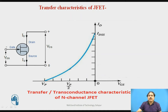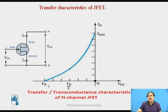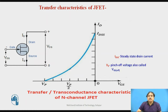The maximum current we witness is called IDSS, and the current can be as low as zero at the voltage called Vp, which is the pinch-off voltage. IDSS is the condition at which the current in the FET remains constant, and Vp is the voltage at which the width of the junction is minimum, giving maximum opposition to current flow.